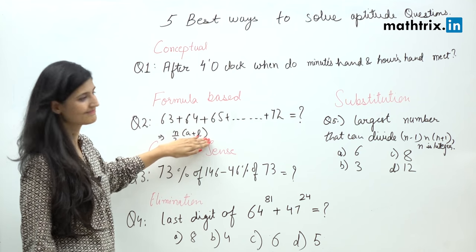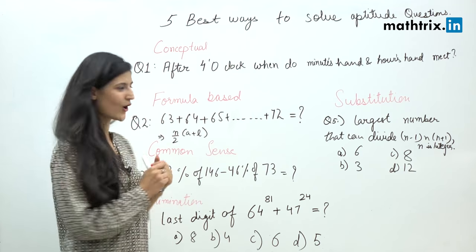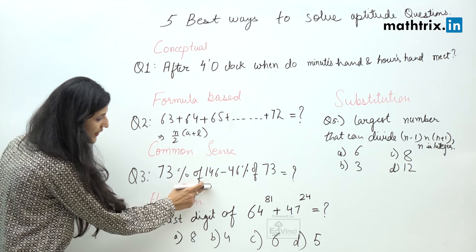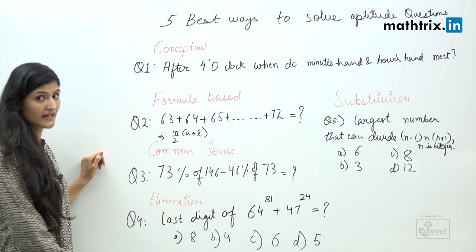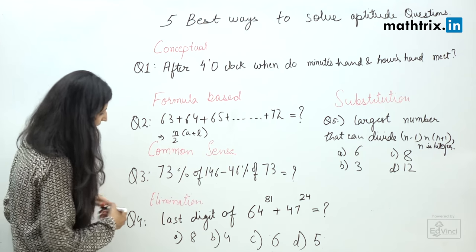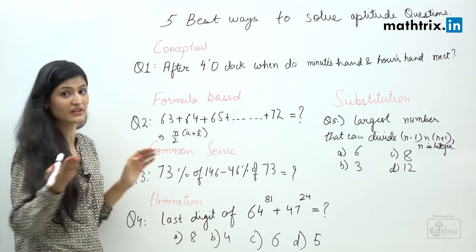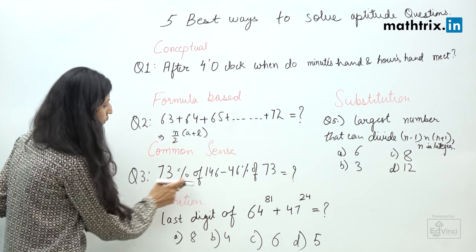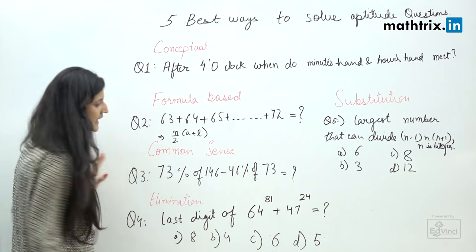Moving on to the next approach, which is common sense. I have a very interesting example for you: 73% of 146 minus 46% of 73. It looks very tricky, but it's very simple. 73% of 146 is nothing but 146% of 73, as we know x% of y equals y% of x. So if we write it like 146% of 73 minus 46% of 73, it's nothing but 100% of 73, which is 73 itself.